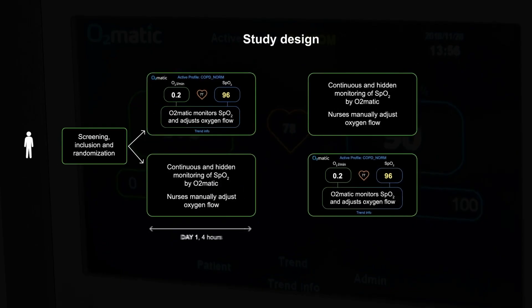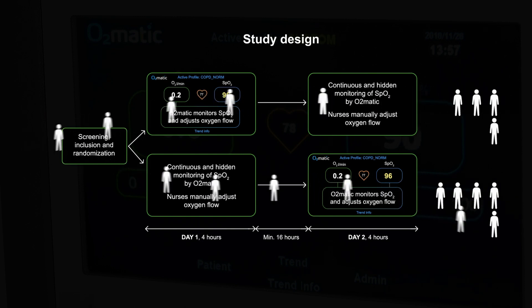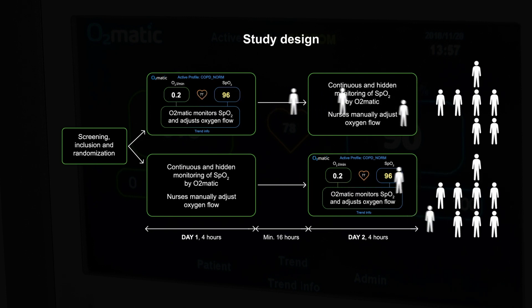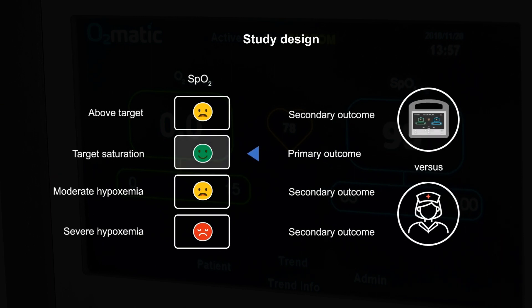In the O2matic trial, we included 20 patients admitted with COPD in a crossover trial with 4 hours of automatic control with O2matic and 4 hours of manual control where the nurses controlled the oxygen delivery. The primary outcome of this study was time within target saturation interval with automatic and with manual control.